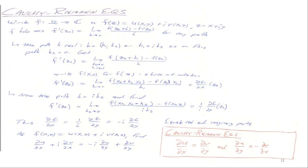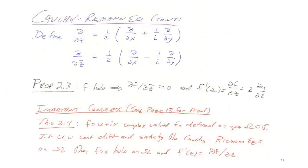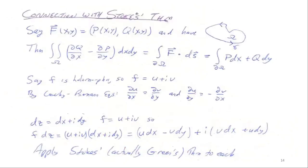Why do we care so much about the Cauchy-Riemann equations? Hopefully you've seen Green's theorem in multivariable calculus. If f(x,y) = (p, q) is a vector-valued function, Green's theorem in the plane says the line integral ∮(p dx + q dy) equals the area integral of (∂q/∂x − ∂p/∂y) over the region bounded by curve γ. This is essentially the curl of the vector field f. For a conservative force in physics, the curl is zero, meaning no work is done moving along a closed curve.